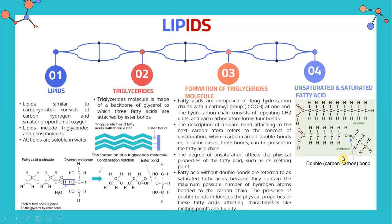Fatty acids with double carbon-carbon bonds are called unsaturated fatty acids. The degree of unsaturation affects the physical properties of the fatty acid, such as melting point. Fatty acids without double bonds are referred to as saturated fatty acids because they contain the maximum possible number of hydrogen atoms bonded to the carbon chain. These are diagrams indicating saturated and unsaturated fatty acids.